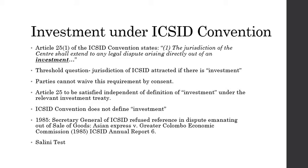When the parties have given their consent, no party may withdraw its consent unilaterally. Thus, as per this provision, ICSID will have jurisdiction to a legal dispute, provided it arises out of an investment between a contracting state and a national of another contracting state and consent is granted. It is important to note that ICSID jurisdiction will get attracted only if there is an investment as per Article 25, even if there is an investment as per the concerned BIT or investment treaty. This is what is known as the double barrel test or the double keyhole test.